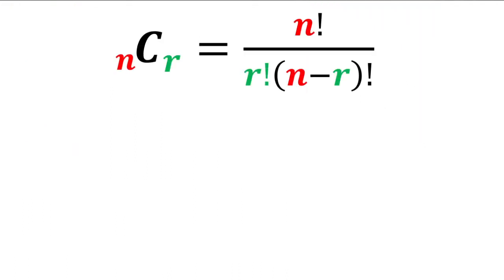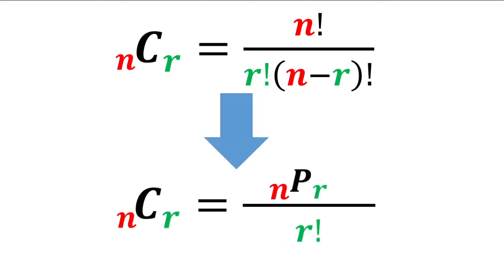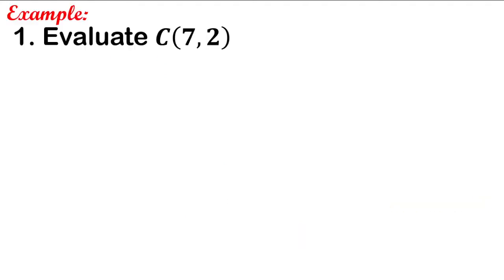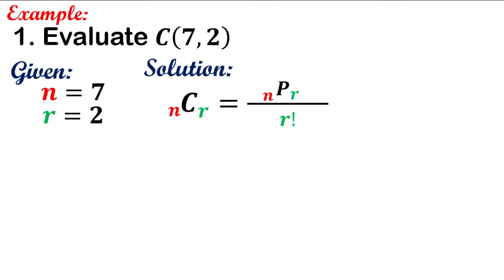Method 2: Instead of using n factorial over r factorial times (n minus r) factorial, you may use the permutation of n things taken r at a time, divided by r factorial. So for n is 7 and r is 2, substitute: C(7,2) equals P(7,2) over 2 factorial.